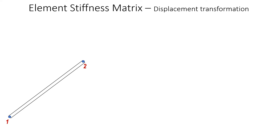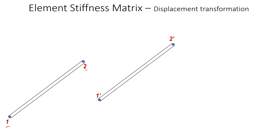We will now discuss the element stiffness matrix for a plane truss member. But before that, we have to first understand the displacement transformation in a plane truss member. Imagine we have a truss member denoted by node 1 and node 2. When we apply a load to this member, it will shift to a new position.